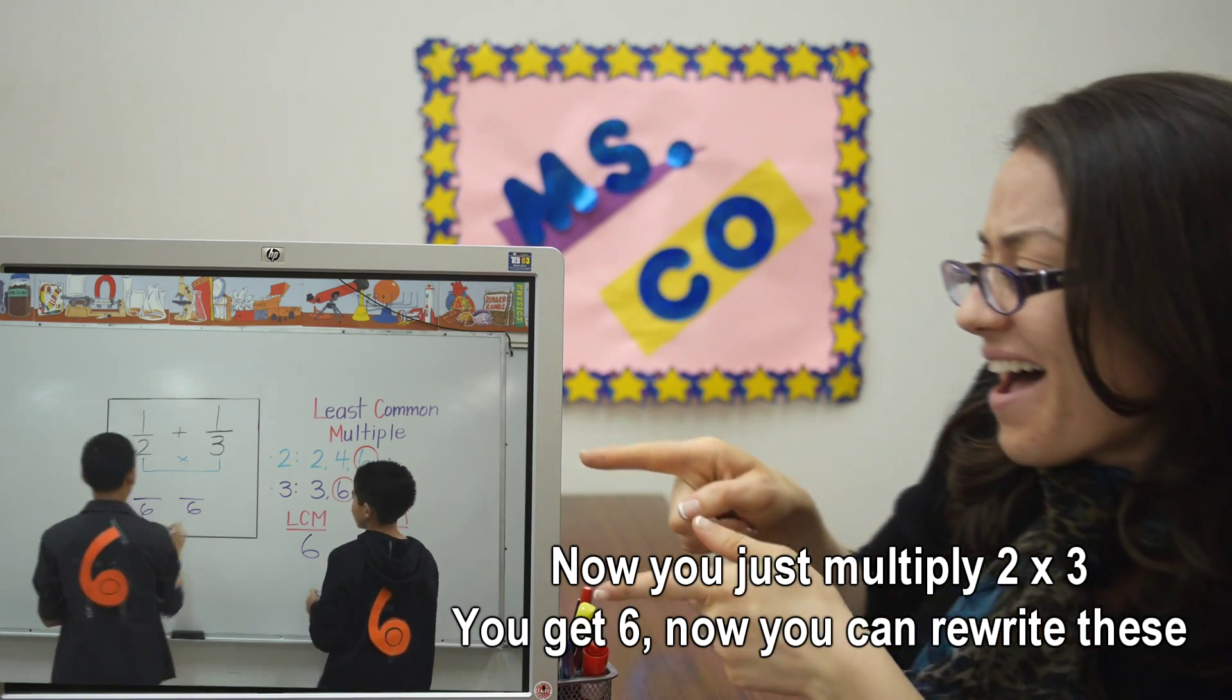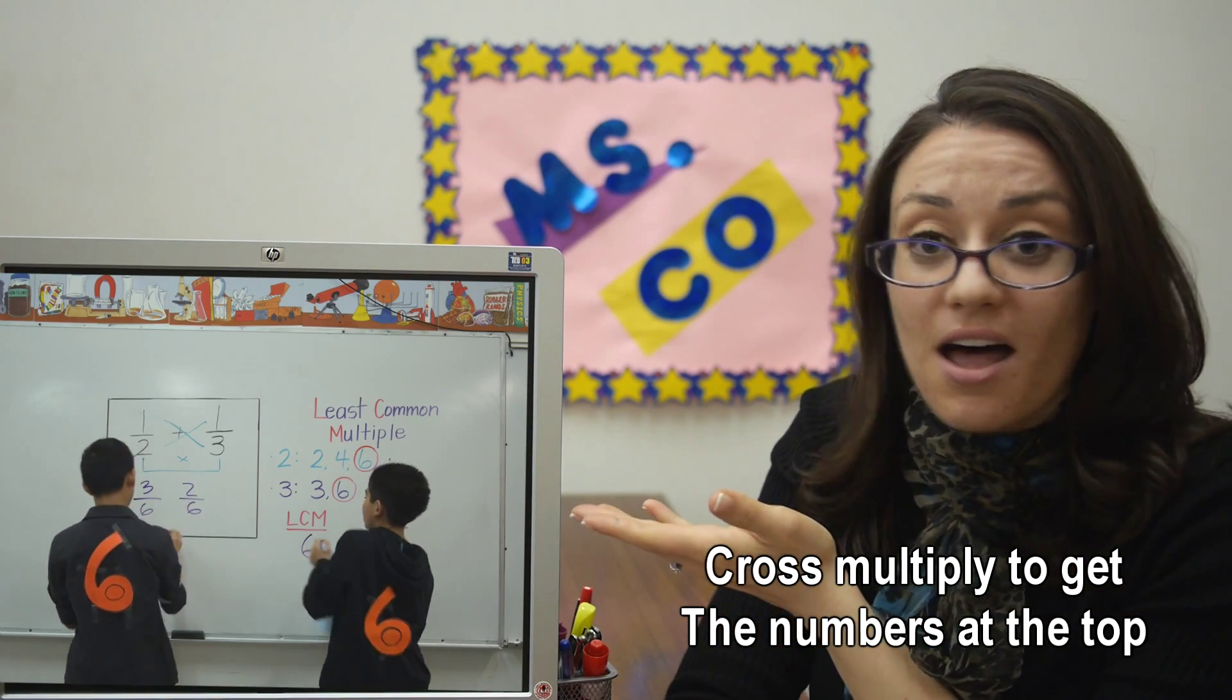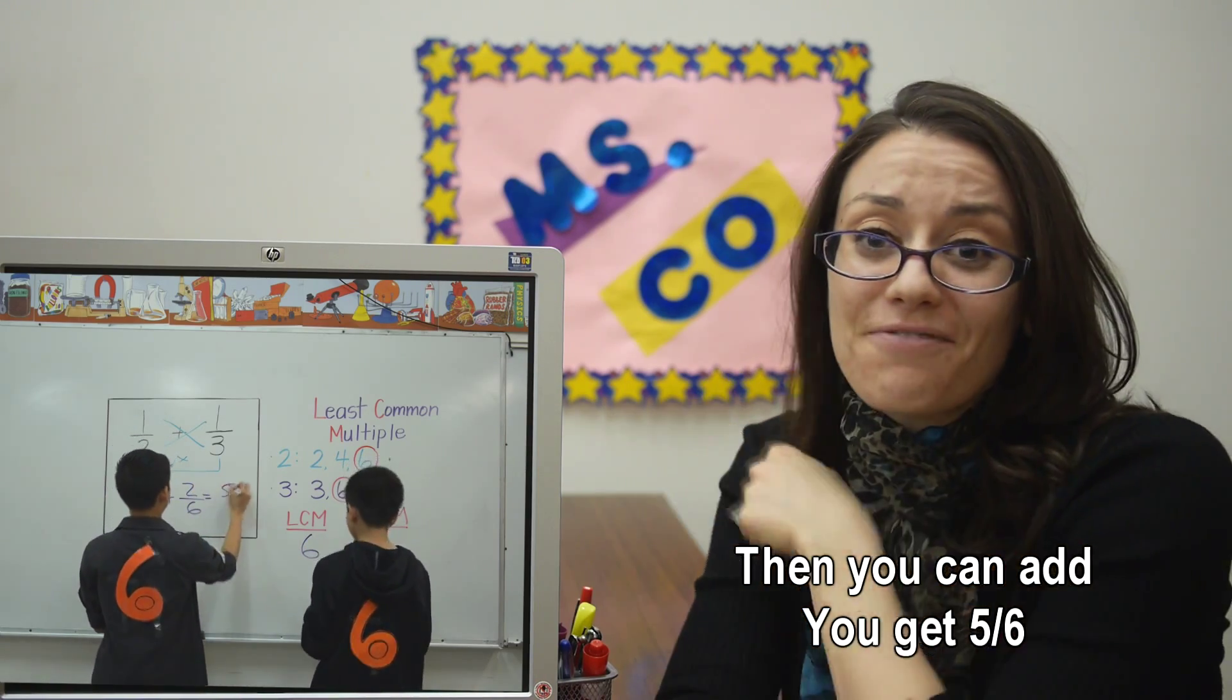Cross multiply, take the numbers at the top. Then you can add, you get five-sixths.